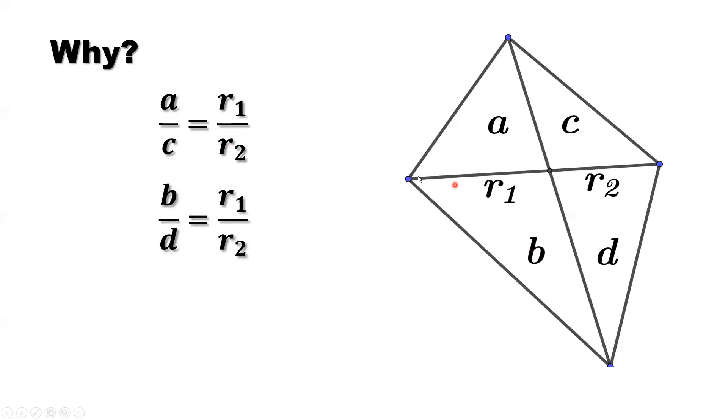Similarly, we can consider the two bottom triangles. The area b over d, left over right, b over d. What's the area of b? Base is the same as r1. What is the height? From here to here, right? So this area also has the same height.